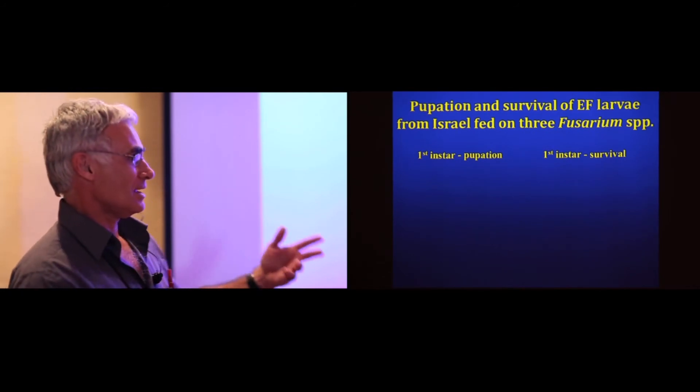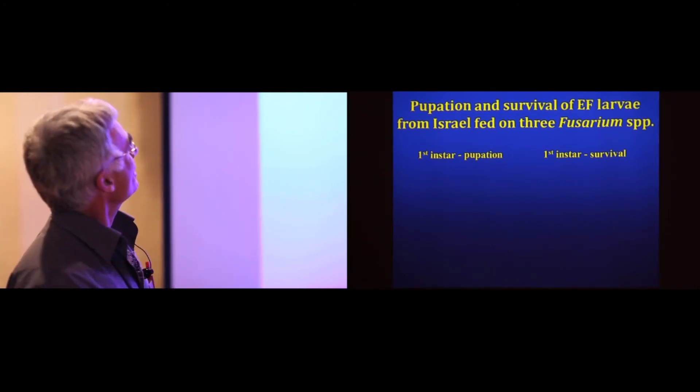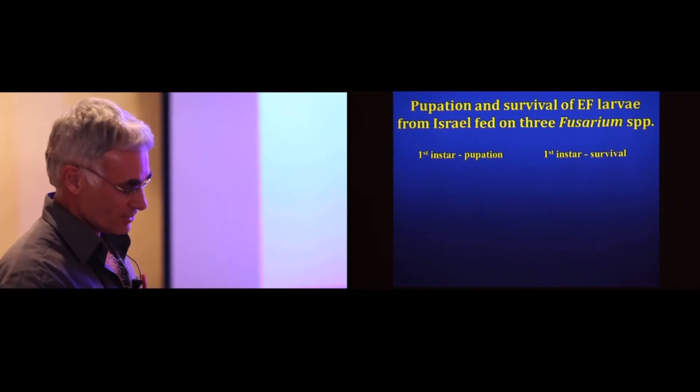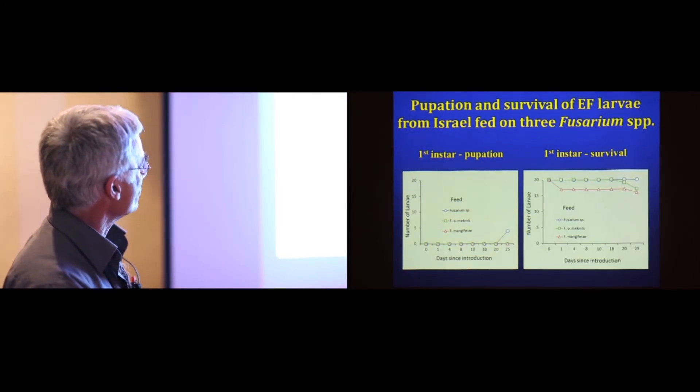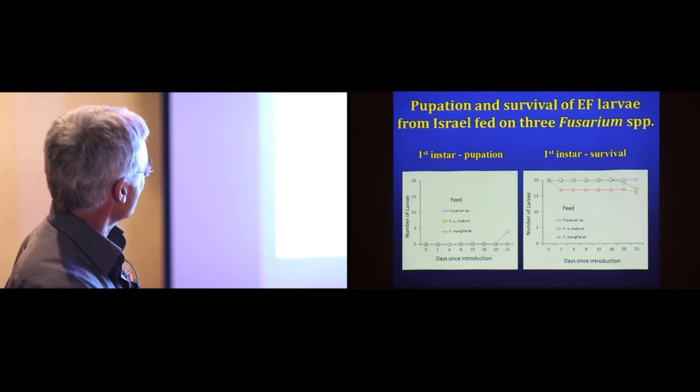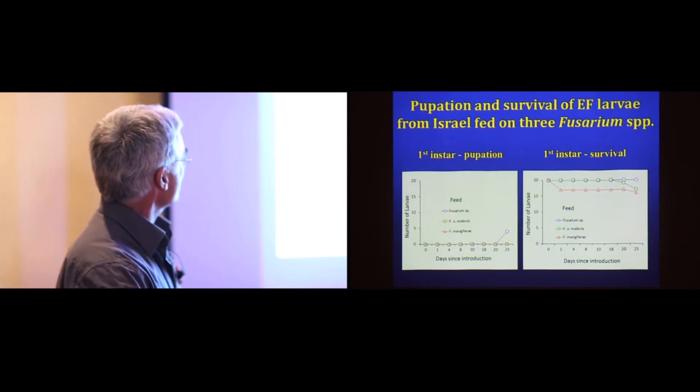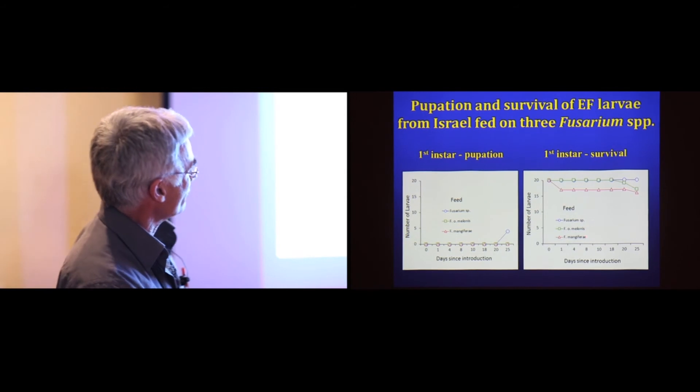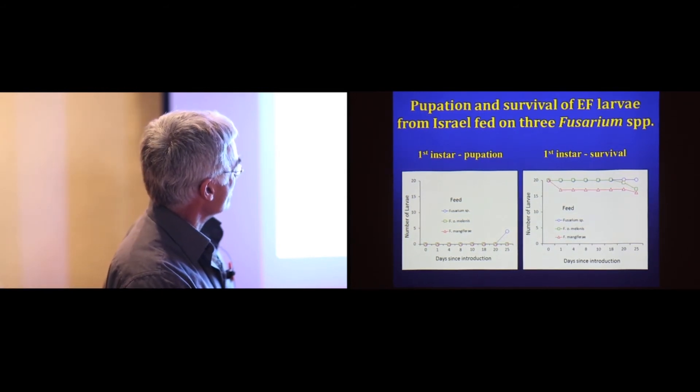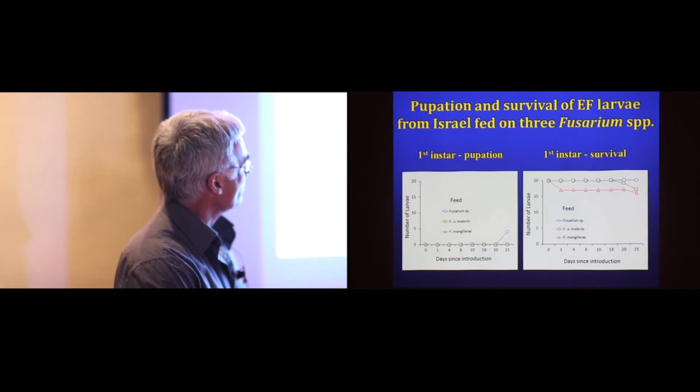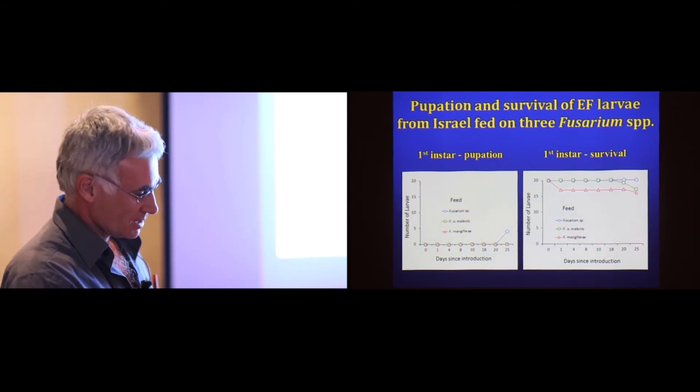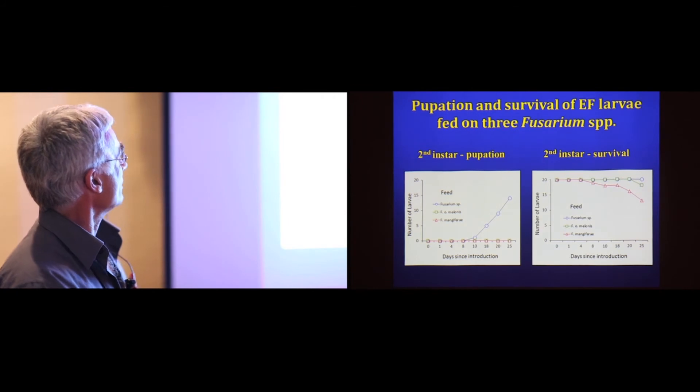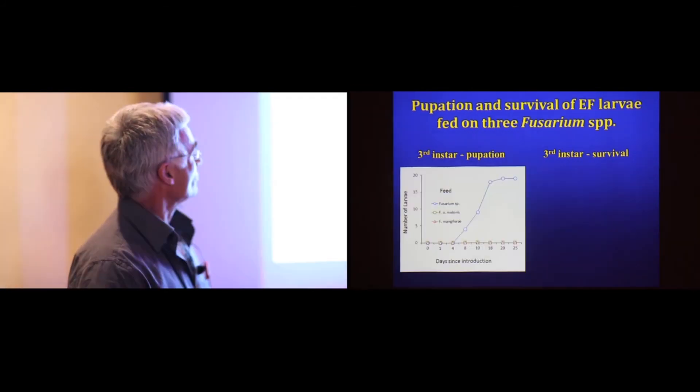Now looking further ahead at what happens when you use the different fornicatus larvae from Israel on different Fusarium sources. You can see here the pupation only occurs on a feed of Fusarium. The number of larvae that survive only from fornicatus remain at 20 when they're fed, whereas the others start dying in time. Again, the same picture at the second instar stage and at the third instar stage.